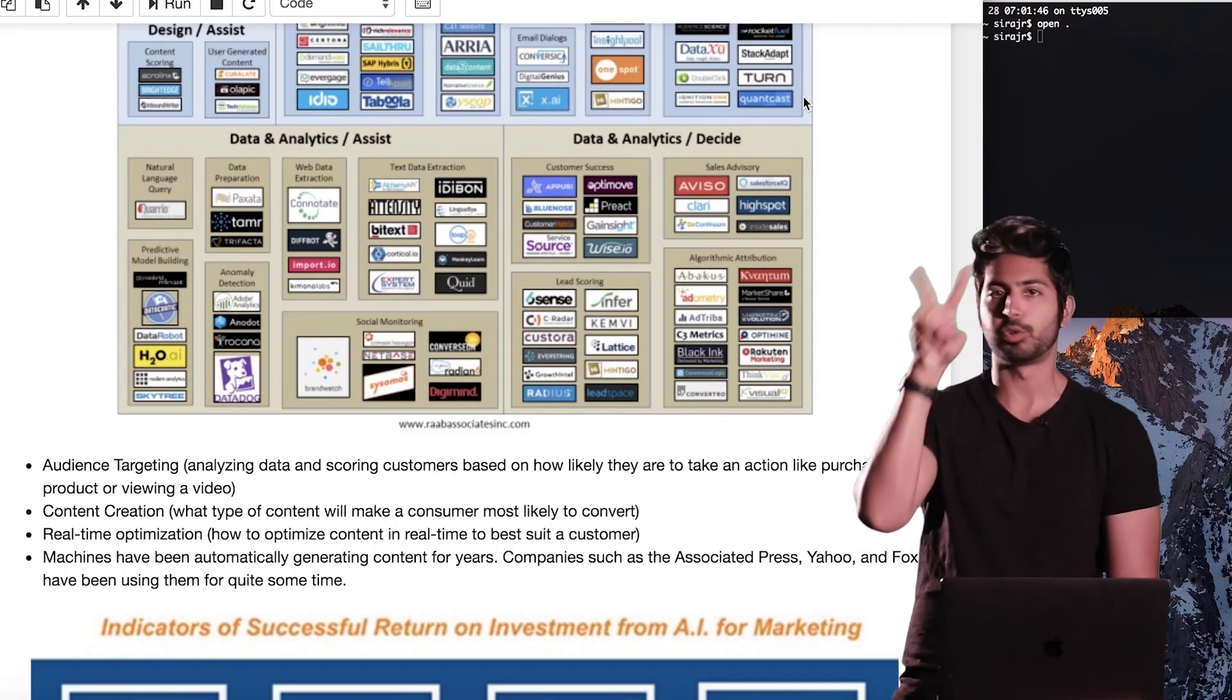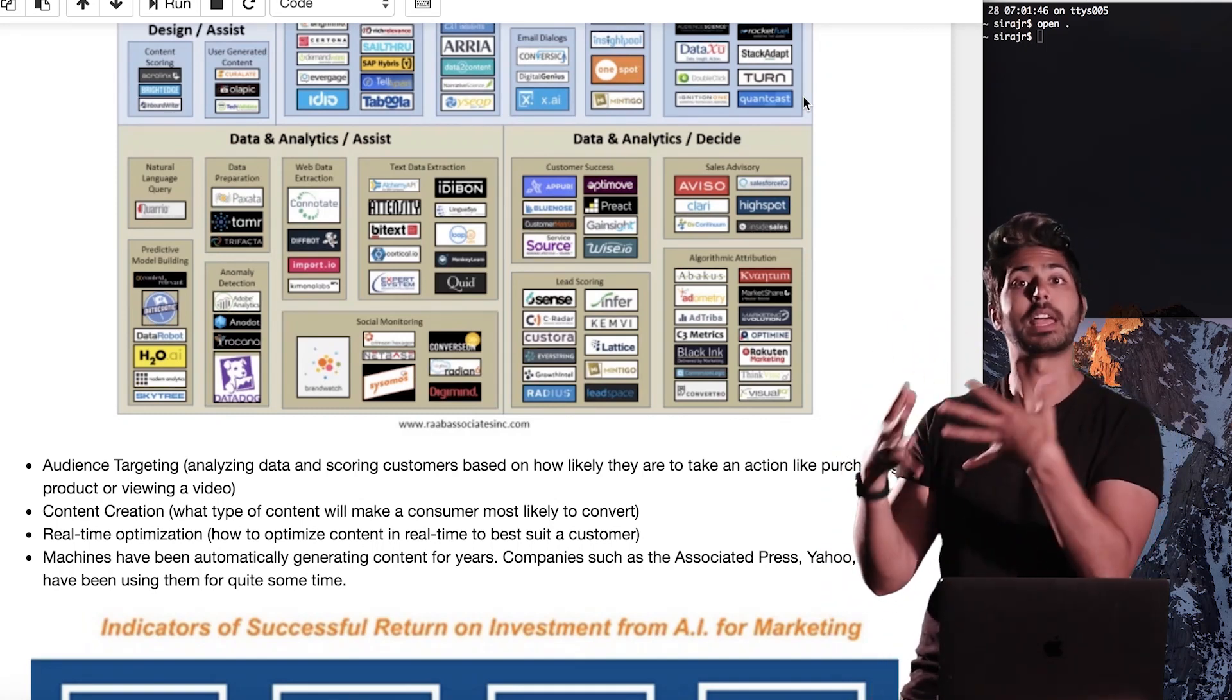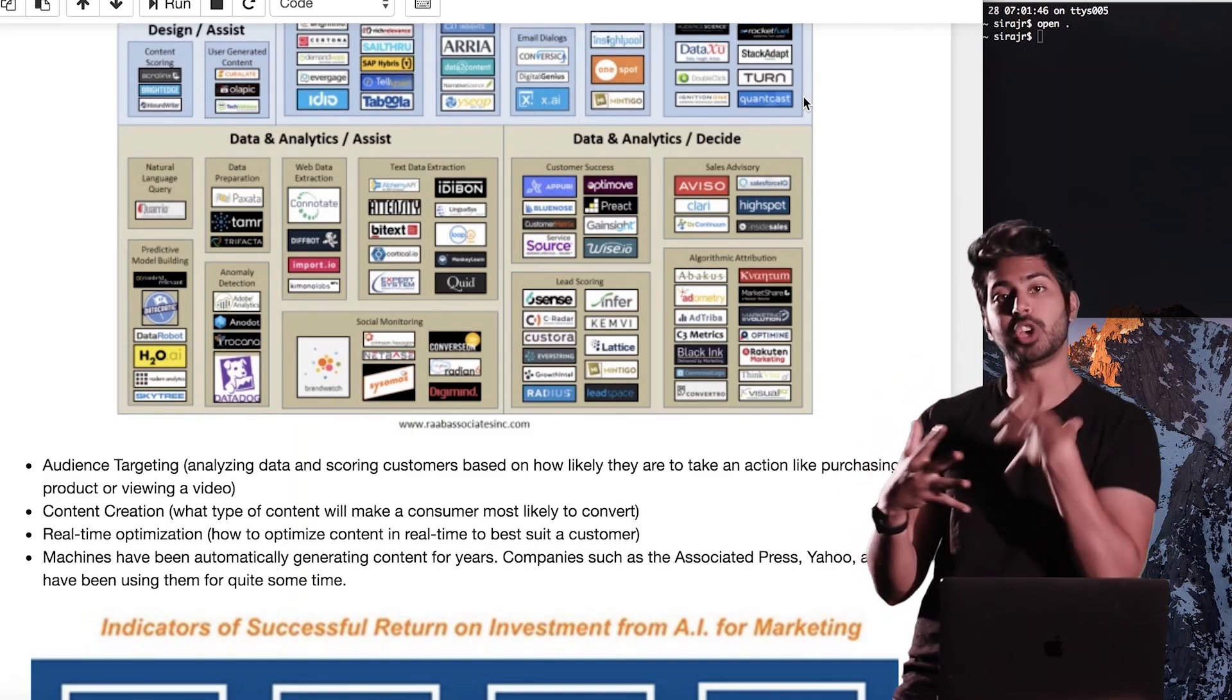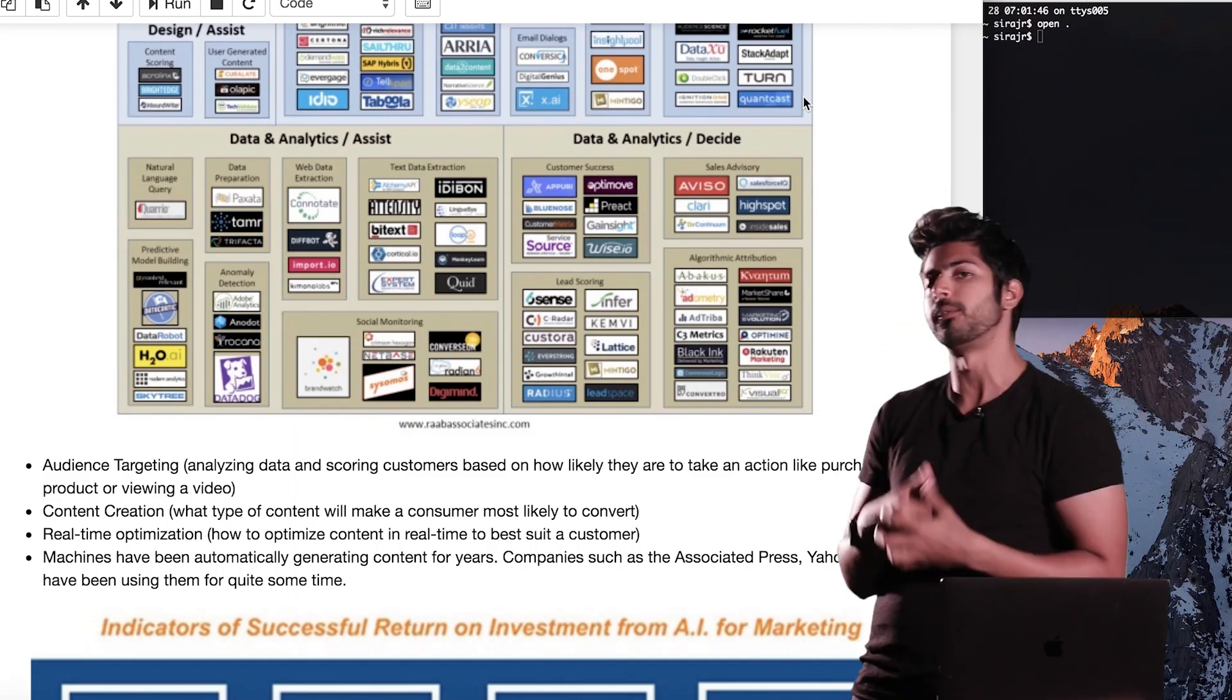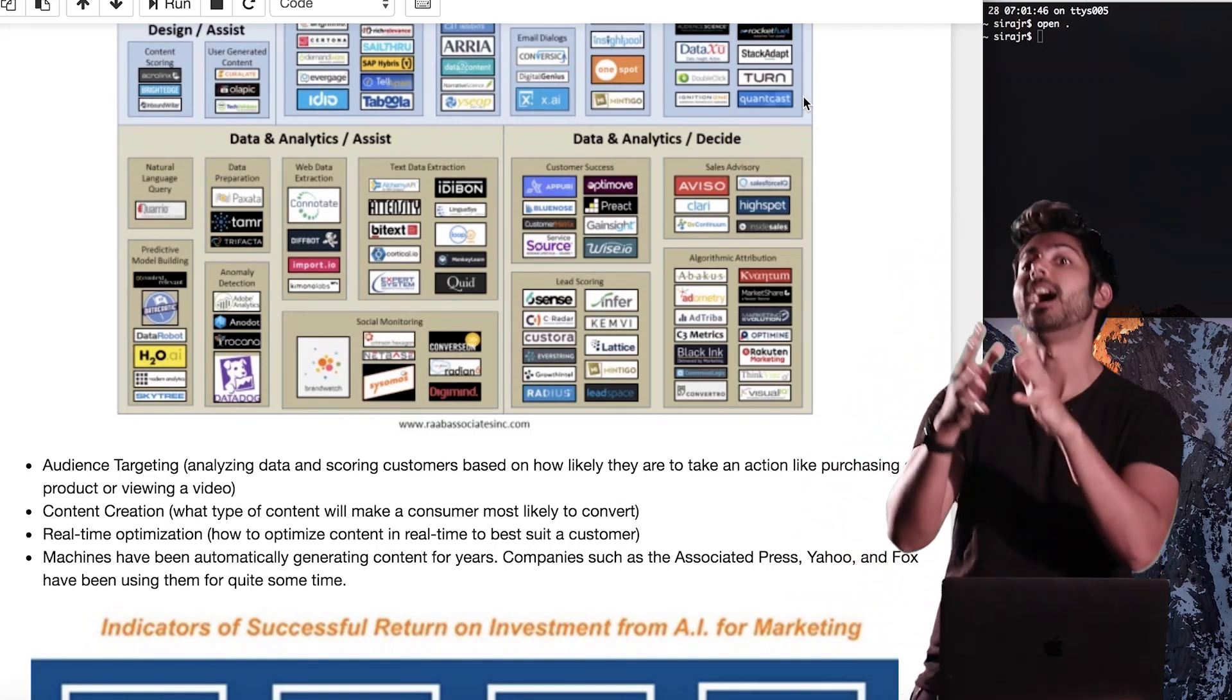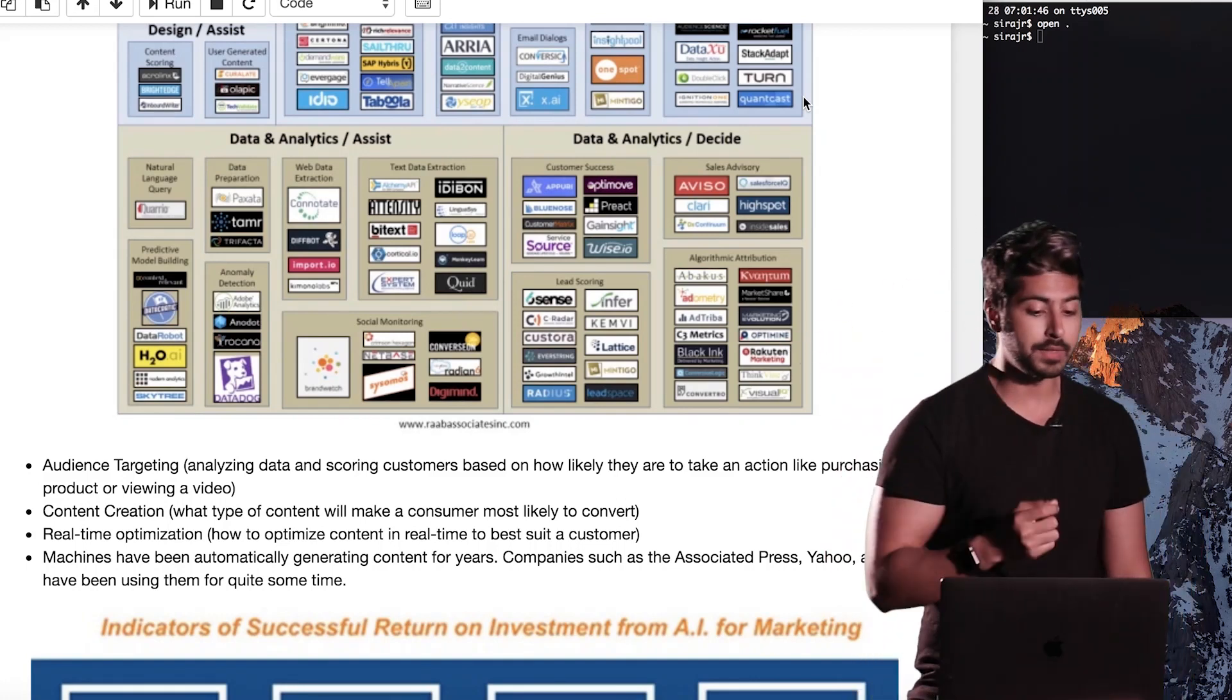The second part is content creation. If you've already targeted those users that are most likely to convert to sales for your product, how are you supposed to generate content that would be best suited for them? The ideal, the easy way is to get a human to do it. But could you get an AI to do it is the question? And the answer, of course, is yes.